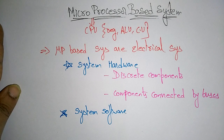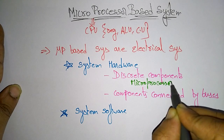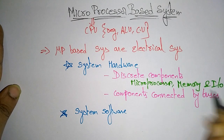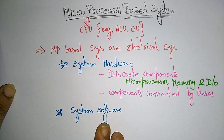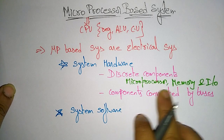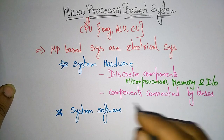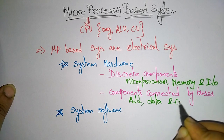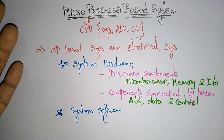The discrete components are the microprocessor, memory, and input/output devices — these are called circuit components. To enable communication between these components, you need buses, which are the address bus, data bus, and control bus. Together, these make up the system hardware.